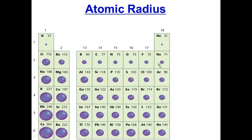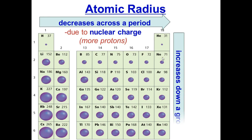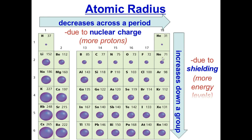For example, lithium is much larger than neon because lithium has fewer protons pulling the electrons in. To summarize: atomic radius decreases across a period from left to right due to more protons, and increases down a group because of more energy levels.